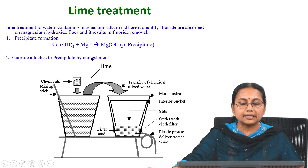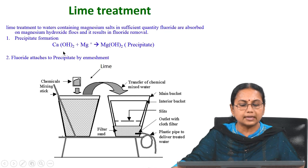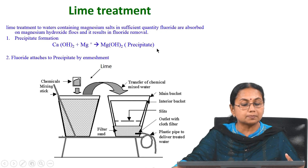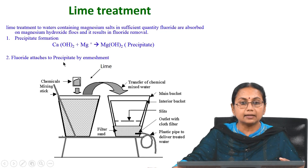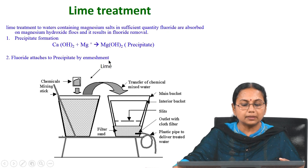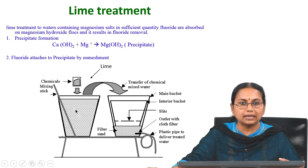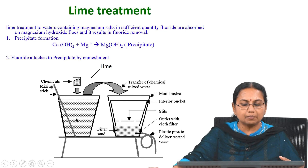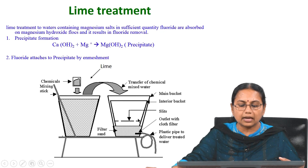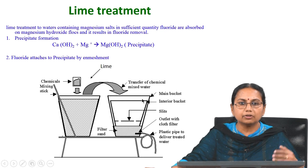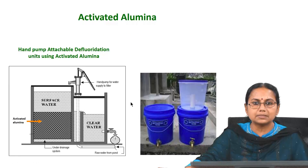The lime treatment precipitation method uses calcium hydroxide and magnesium to produce a magnesium hydroxide precipitate, and the fluoride attaches to the precipitate by enmeshment. You take a bucket of water with the chemicals, allow it to settle, and take the supernatant — most of the time the fluoride concentration will come down within the permissible limit.